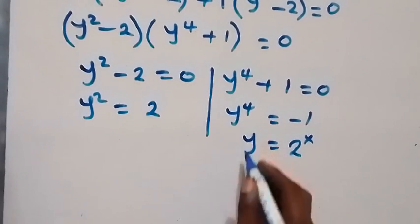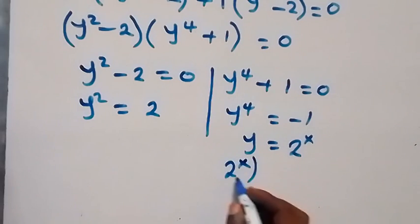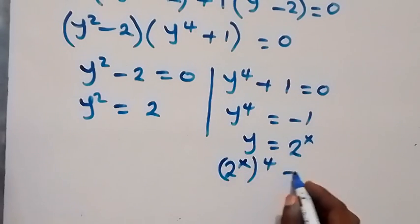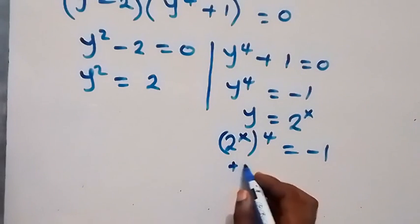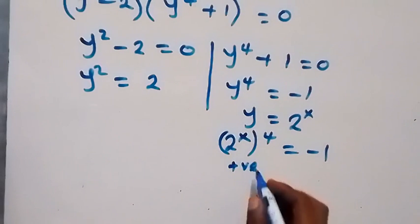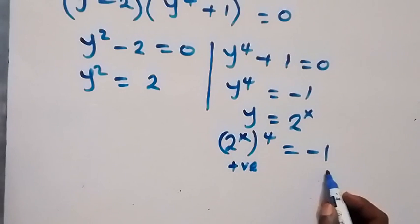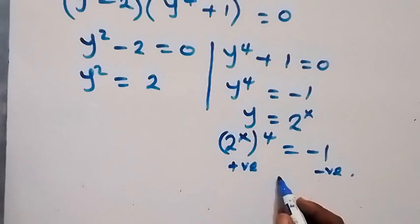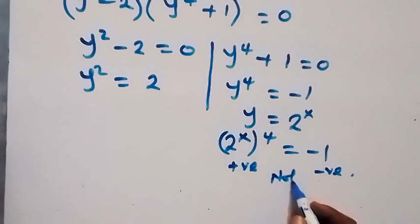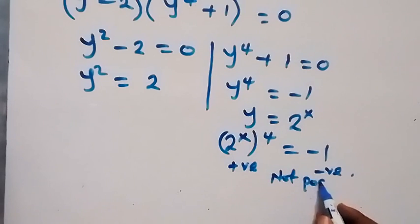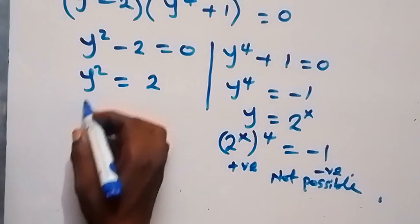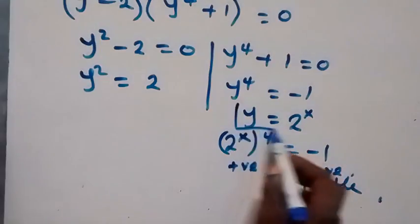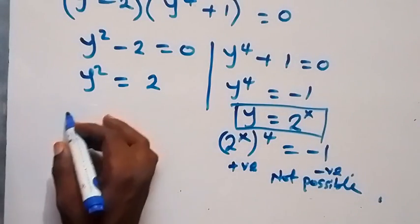So now, from the second case, we have 2 raised to power x, raised to power 4, equal to minus 1. When we check this, 2 raised to a power is always a positive number, but here is a negative number. So there won't be a solution here — this is not possible. On the first case, y is 2 raised to power x, so we slot this in.